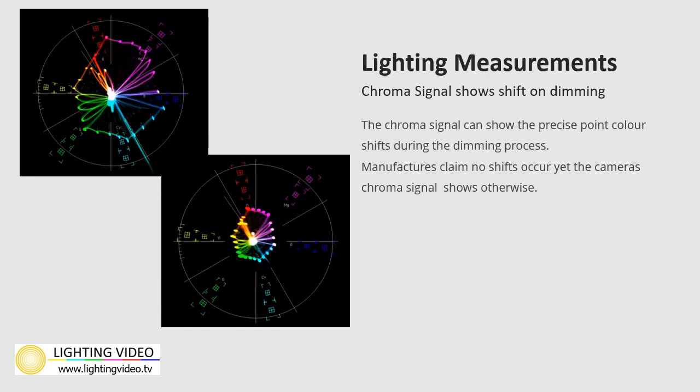Many manufacturers claim their LED fixtures do not shift when dimmed. Yet, how many have actually tested their claims on camera? In this example, the chroma signal shows exactly at which point of dimming the chroma shift occurs on camera. This impacts the entire color range of the chroma signal, making a significant change to the camera's ability to render those colors accurately at the LED's full intensity value compared to their dimmed value.